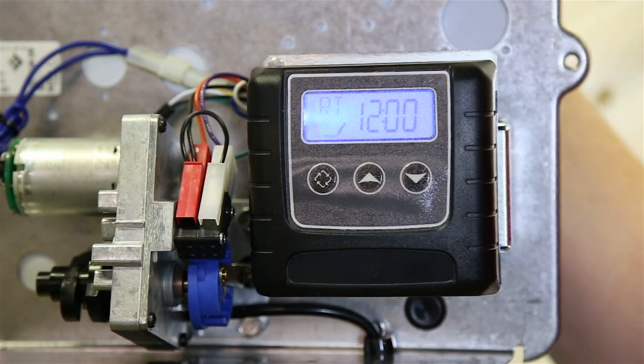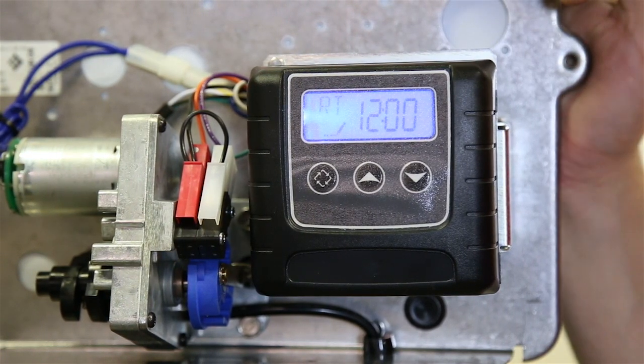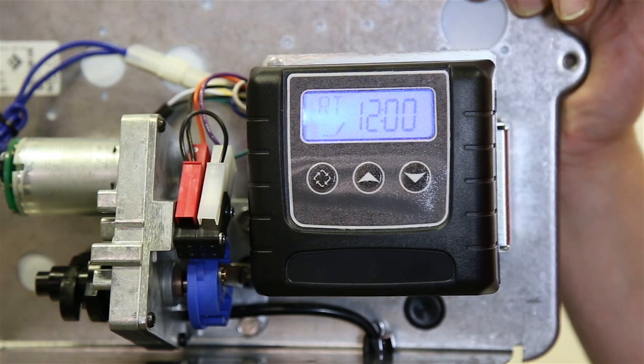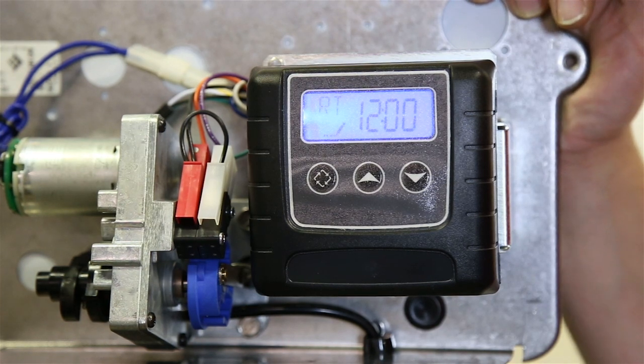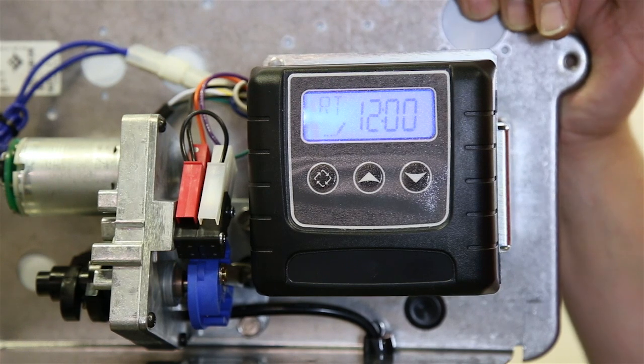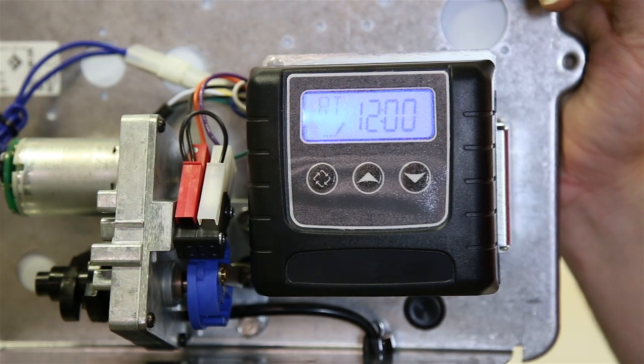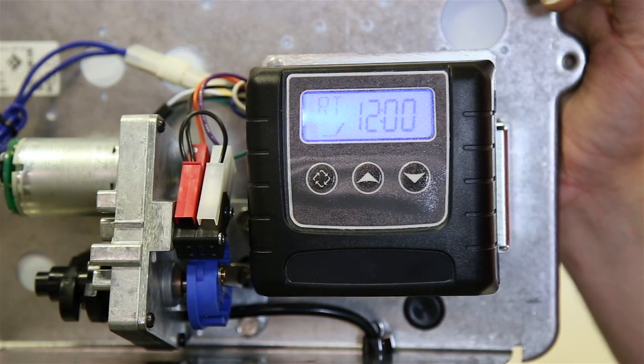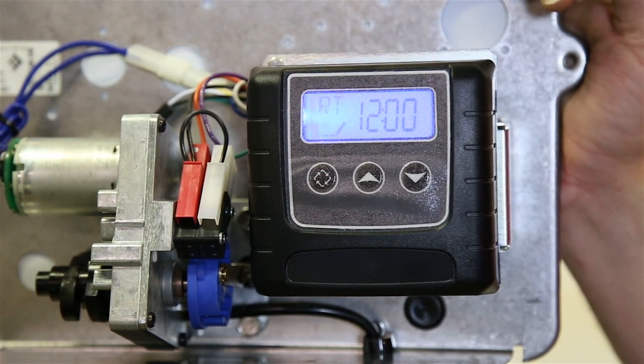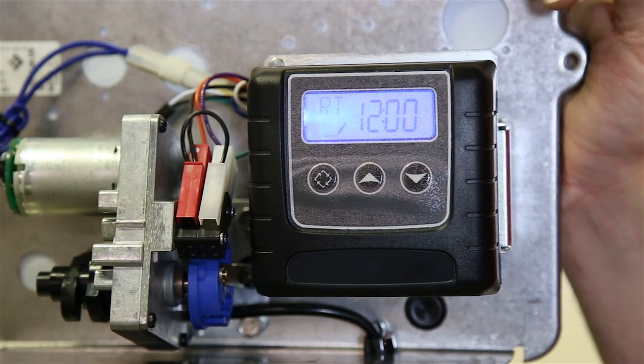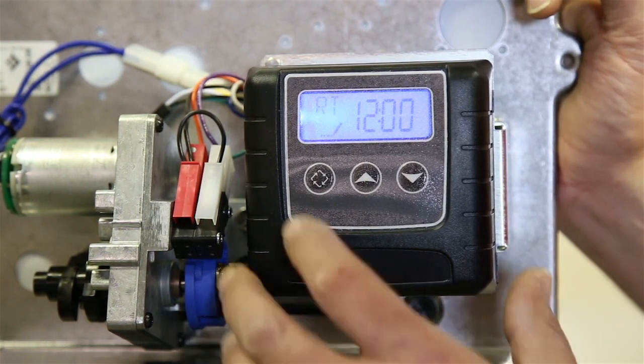Now this is the regeneration time. They're factory set up to regenerate at 12 AM. Typically water softeners are going to regenerate somewhere around 2 AM. This particular unit is going to take somewhere around an hour to regenerate. So you want to make sure it's done well before the softener regenerates. So I would say set this for at least an hour and a half before the softener regenerates to make sure that this is completely done if they both happen to regenerate on the same night.